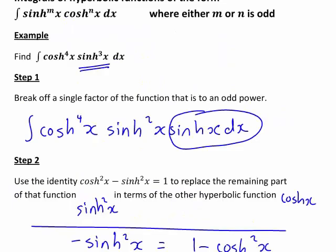So just a quick recap of what we did. The hyperbolic function, in this case sinh(x), which appeared to an odd power in the integrand, we broke off a single factor of this so that in this case it became sinh²(x) times sinh(x).